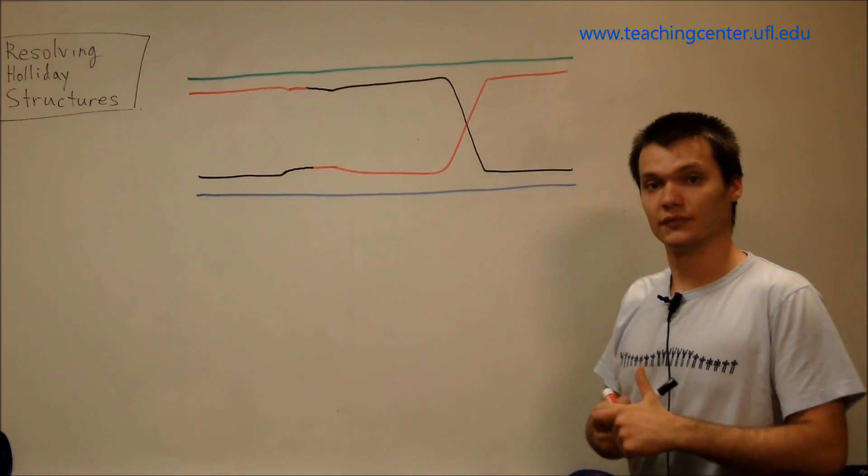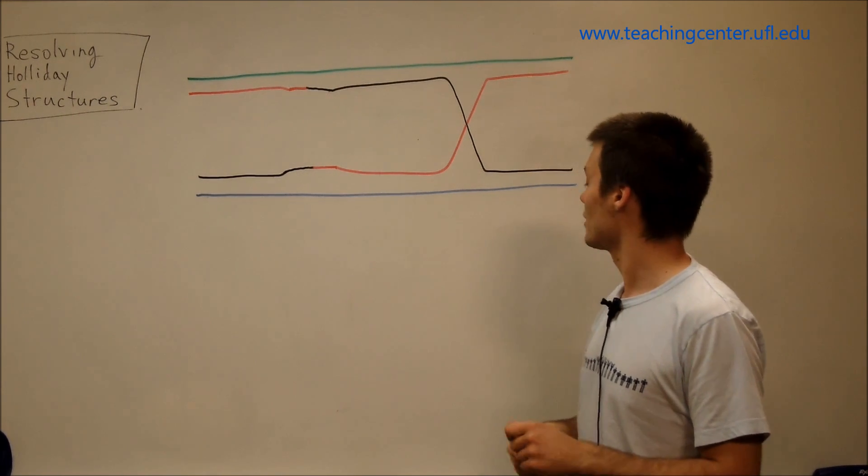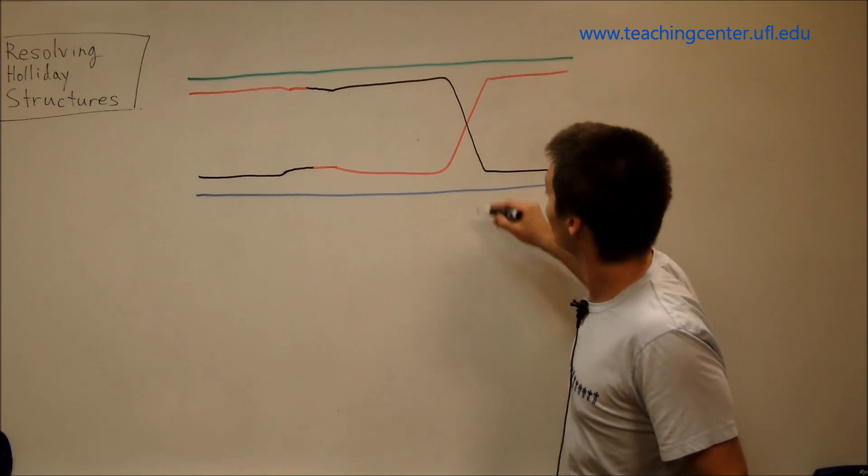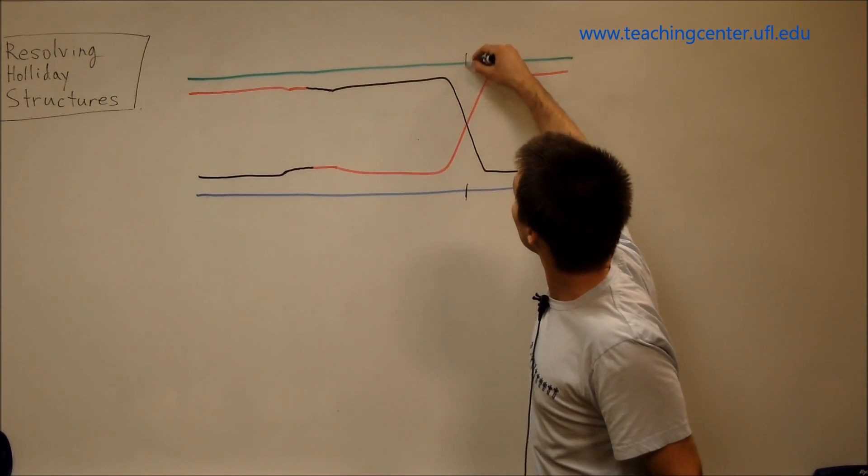Alright, so join our red and black strands back up. Okay, that was fairly straightforward. So for this next cut, we're going to make our vertical cut here and here.